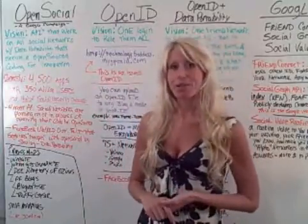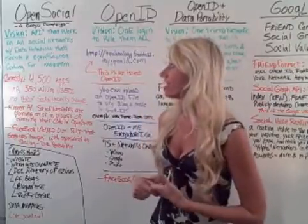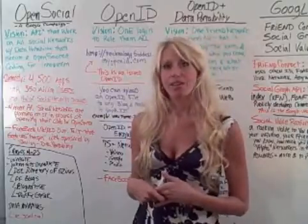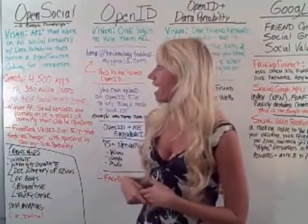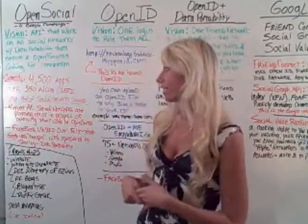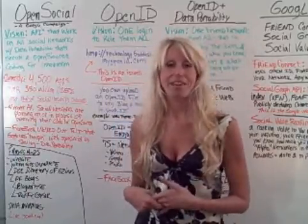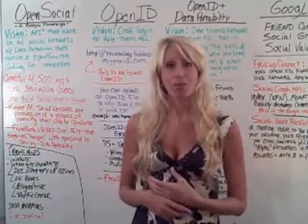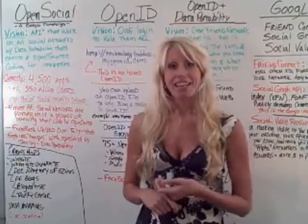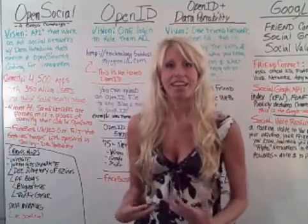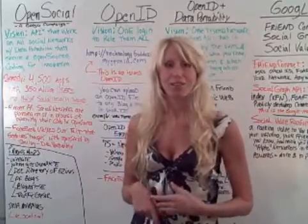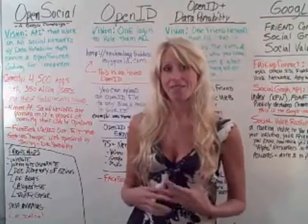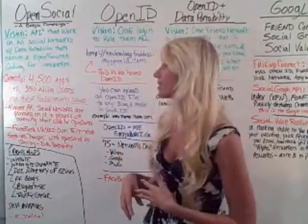OpenSocial is pretty much spearheaded by Google, and the overall vision is an API that works in all social networks with full data portability — secure data portability with open source coding for innovation. The reason they have opened it as open source coding for the widgets and the APIs is to really create innovation and new ideas. And it seems to be working, because if you look at some of the widgets out there for MySpace and some of the great new APIs developed as a result of open source...